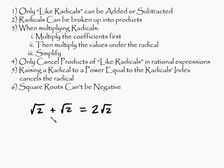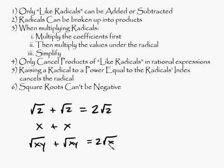And the reason why it's 2 root 2 and not like root 4 is because if it was root 4, you'd be multiplying, and that's not what we're doing. Like radicals are like x plus x. Those are like variables. Well, in this case here, like radicals have the same number or the same variables inside. So here's another example. Rad xy plus rad xy is equal to 2 rad xy.